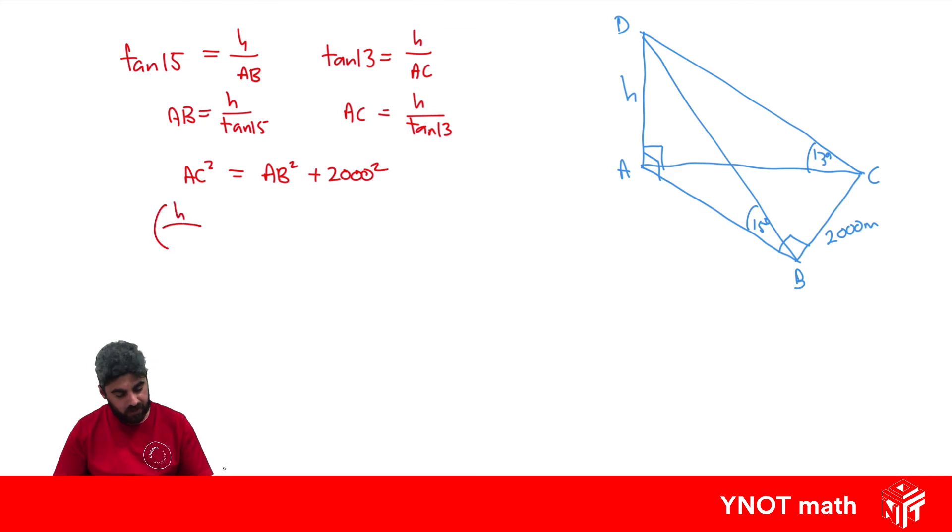So AC is just H over tan 13 and that's all squared. AB is just H over tan 15 and that's all squared, and 2000 squared gives us 4 million. Let's square these fractions so we square the numerator and square the denominator. Whenever we square a trig function we write the squared in between the function and the degrees, so we get H squared over tan squared 13 equals H squared over tan squared 15 plus 4 million.